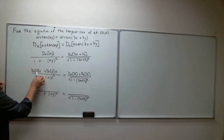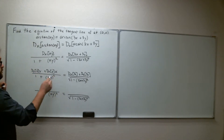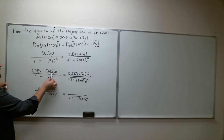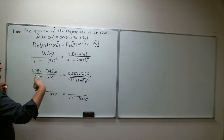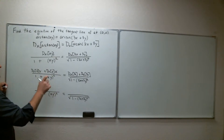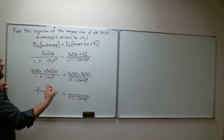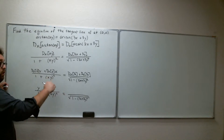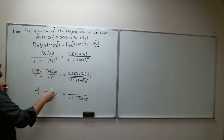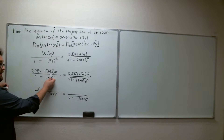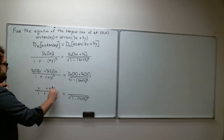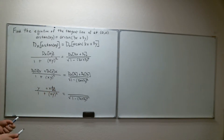The derivative of x with respect to x is just 1, so 1 times y gives us just y. For the derivative of y with respect to x: the derivative of y is 1, but since we took the derivative of y with respect to x, we have to multiply by dy/dx — so this results in dy/dx, but times x, written as x dy/dx.